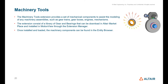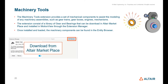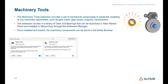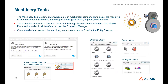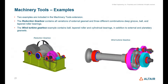A machinery tools extension that will be soon available at Altair One Marketplace can be added via the extension manager. The machinery tools consist of a library of gears and bearings as higher-level entities that can be used in motion models.